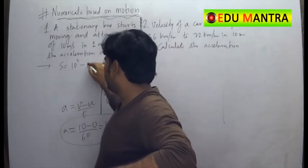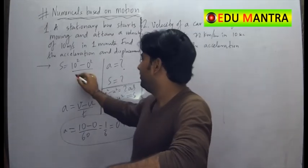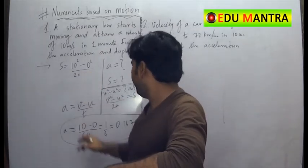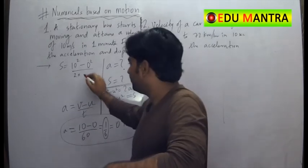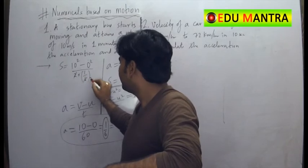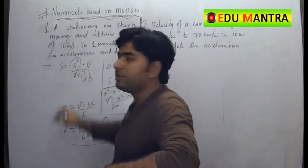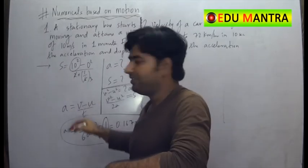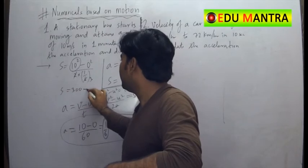So 10 square minus u square is 0 square by 2 and a. So what is a? a we have already obtained. I can write as 1 by 6. So it is 1 by 6. This is cancelled. 3 gets multiplied over to this 100. 10 square is 100. So 3 into 100. So S is equal to 300 meter. Right?